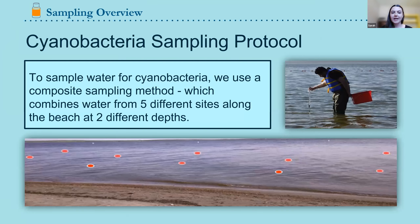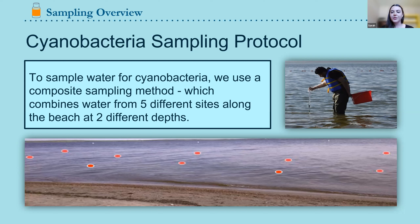For cyanobacteria, all sampling is done as composite sampling. This method combines water from five different sites at two different depths per site — totaling 10 separate samples — into one bottle. You'll need one ACFT microcystin bottle, two 50 mL conical tubes, and one requisition form.